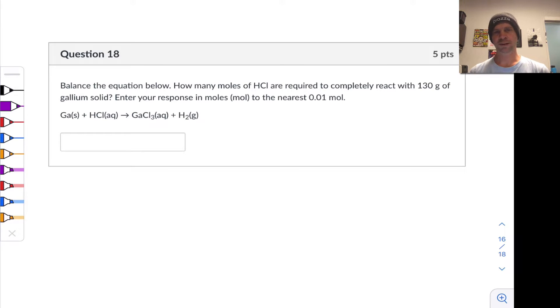Hey guys, in this video we're going to begin looking at questions from chapter 5 in practice exam 1.2 in the fall 2021 semester. So these are all about stoichiometry. In this first question we're asked to balance the equation below and then we're asked about the number of moles of HCl required to react completely with a given mass, 130 grams in this case, of gallium solids.